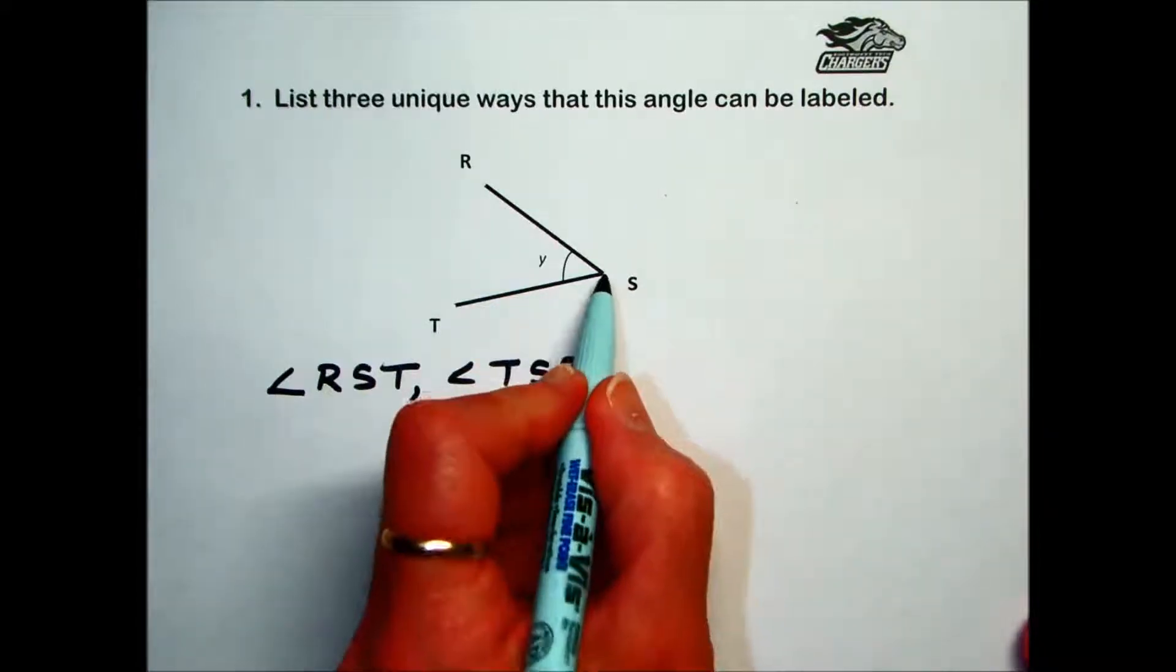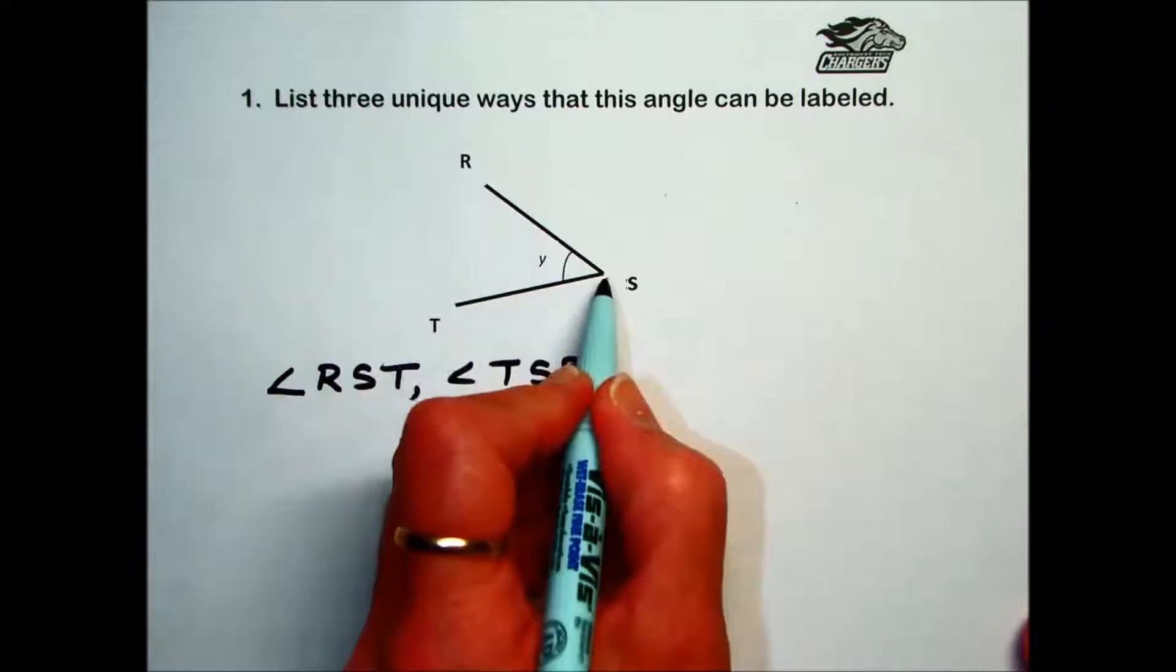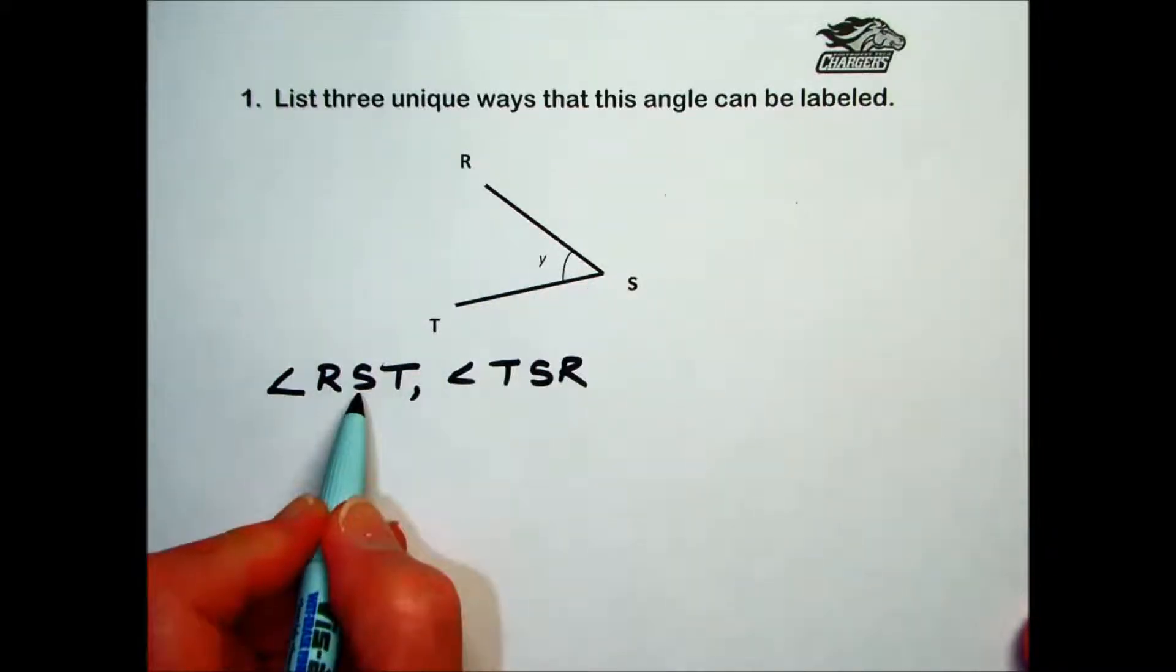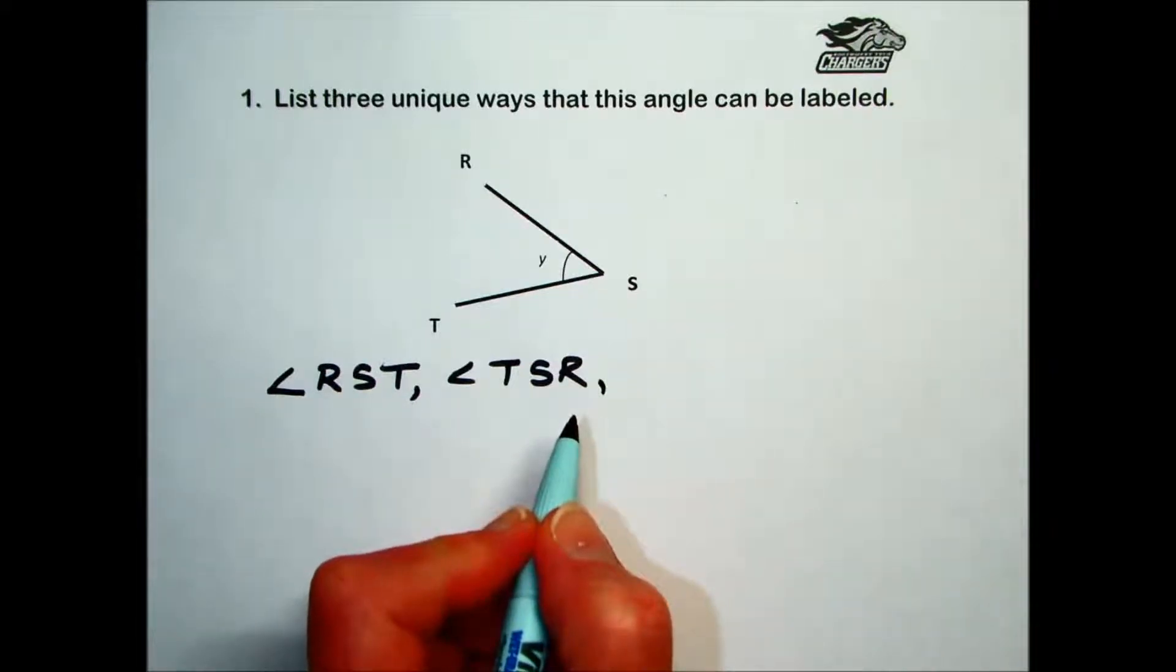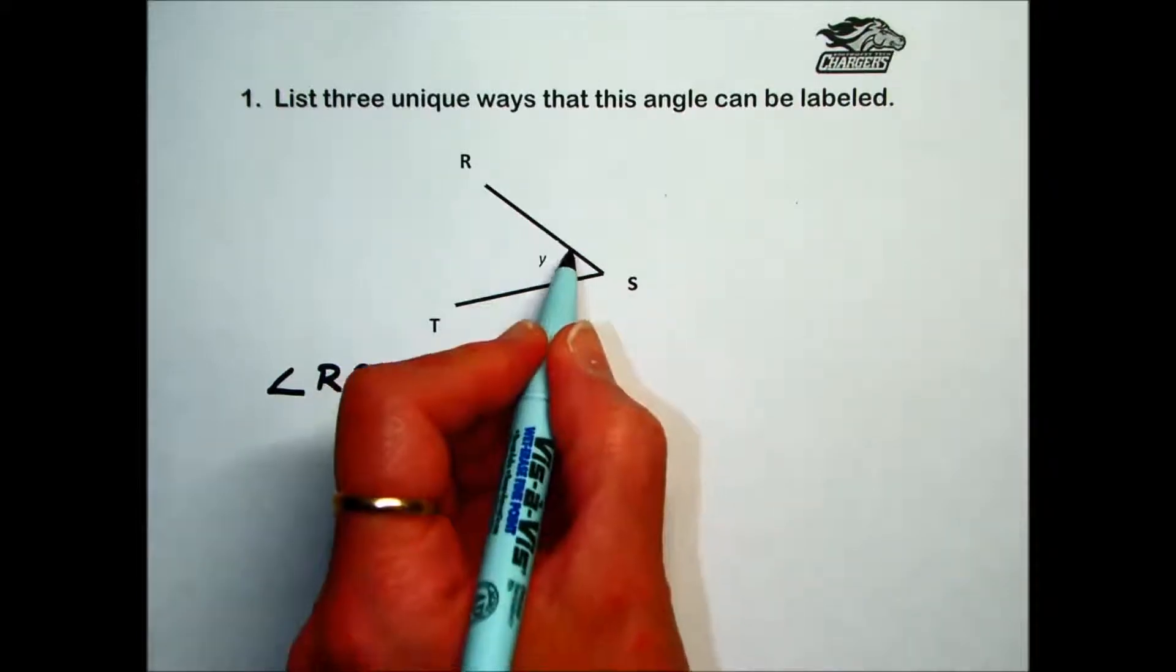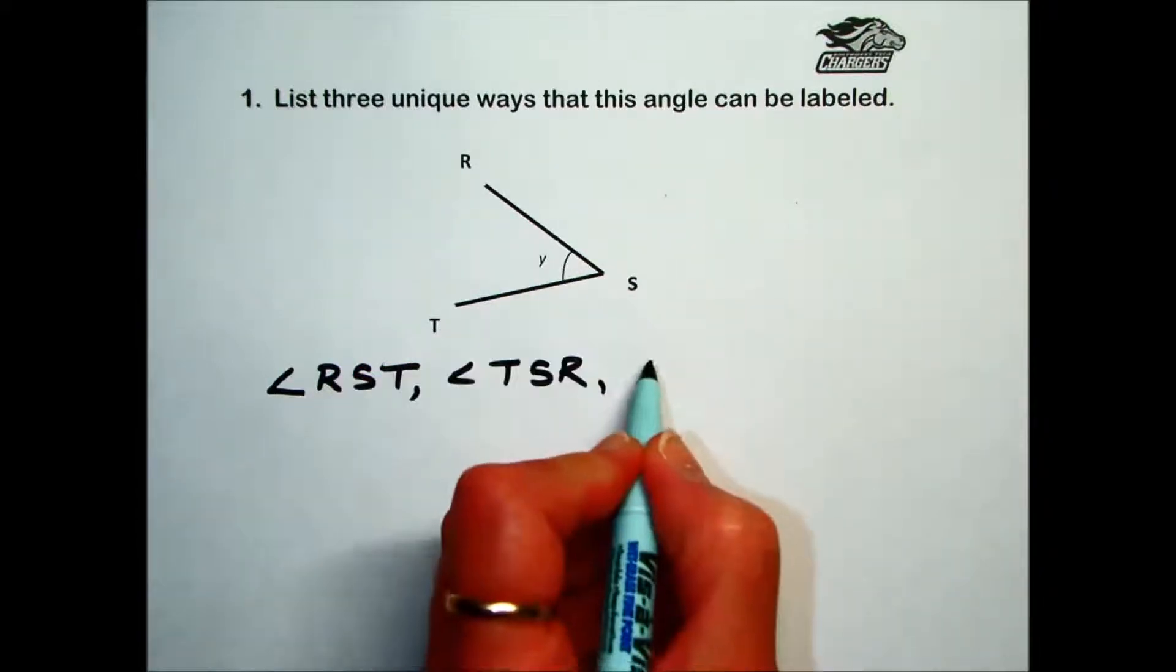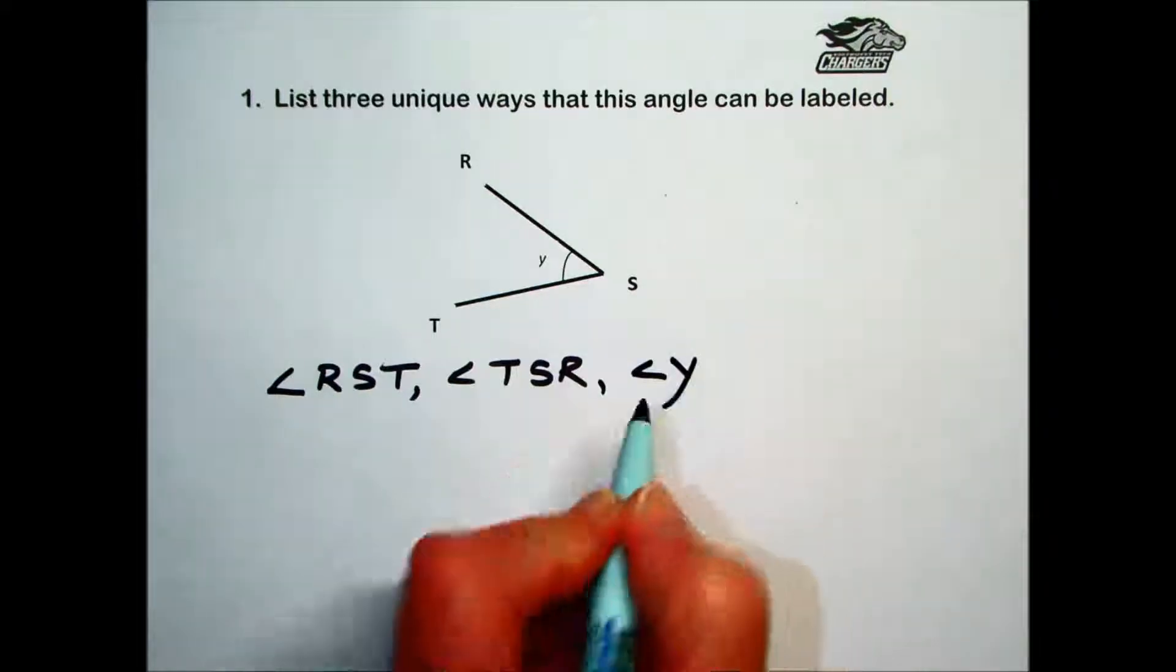Another possibility is that we can identify this angle by its size. In this case, that size is indicated by the letter Y, so this would also be a correct way of labeling it.